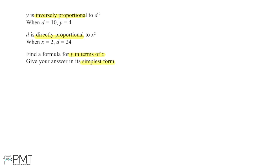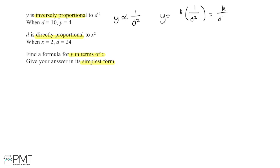To start, I'm going to write out and set up these equations and proportional relationships so I can see exactly what's happening. If y is inversely proportional to d squared, then y is proportional to 1 over d squared. I can rewrite this as y equals some constant multiplied by 1 over d squared, which gives y equals k over d squared.